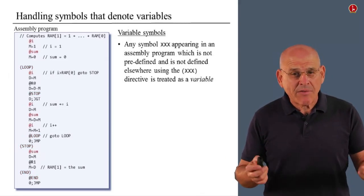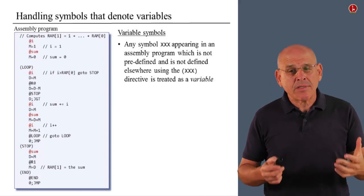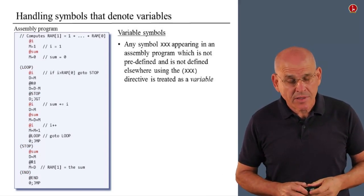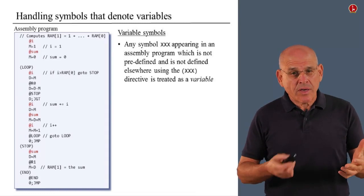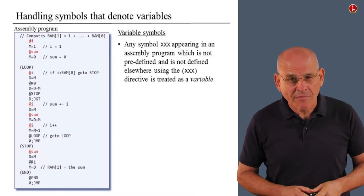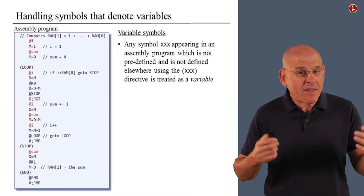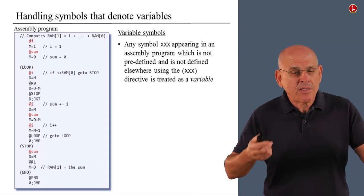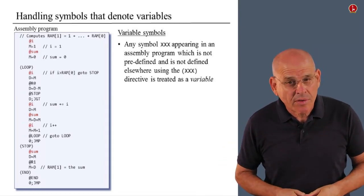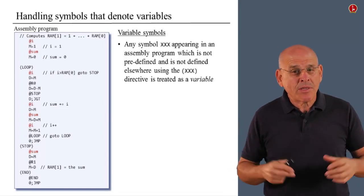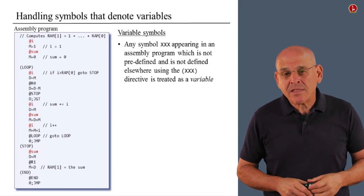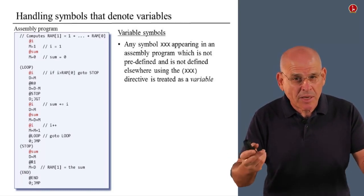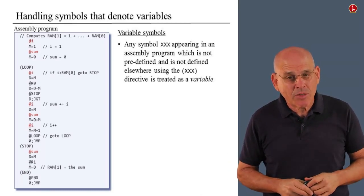The last category of symbols that we have to deal with are symbols that represent variables. Now, as you recall, when you wrote programs in the Hack Symbolic language, we have this fantastic ability to create and use as many symbolic variables as we want. This is one of the most important abstractions in programming. And someone has to pay the price, so to speak. Someone has to implement this abstraction.